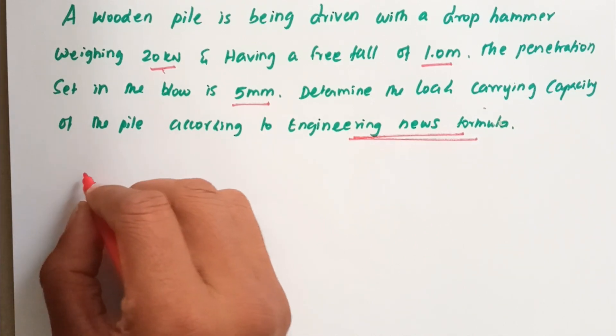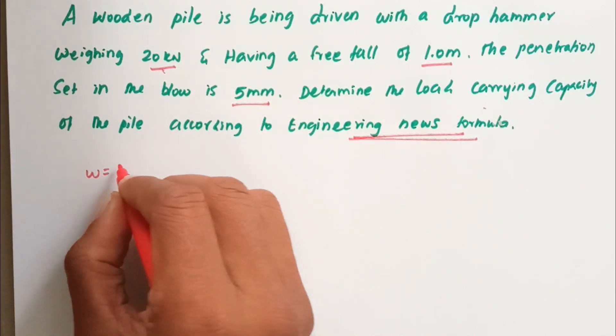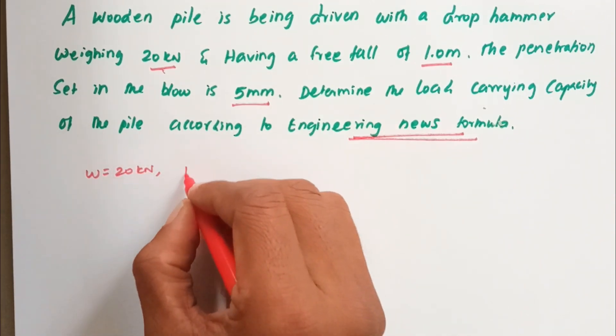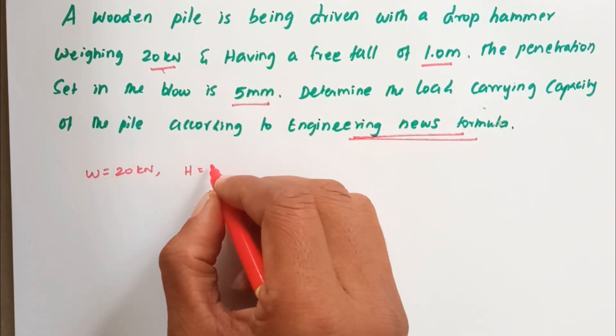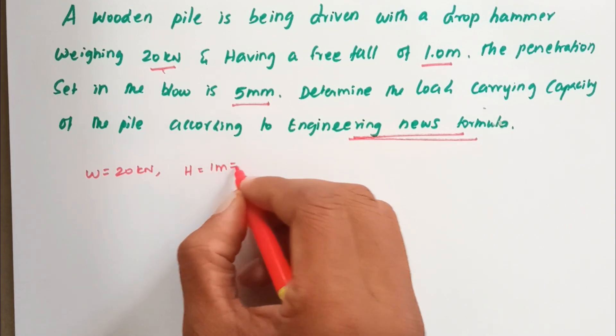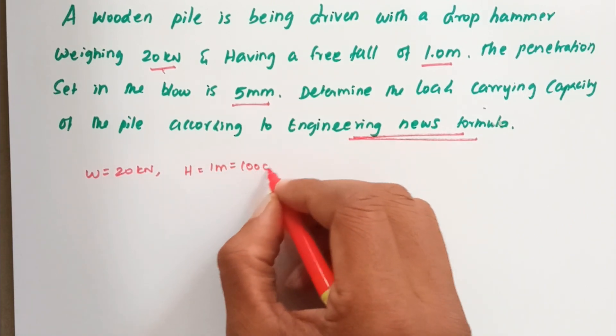The given values are: W equals 20 kilonewtons, H equals one meter which equals 100 centimeters.